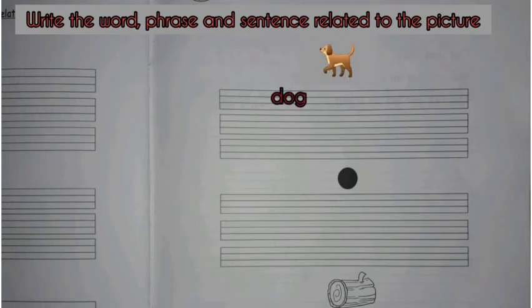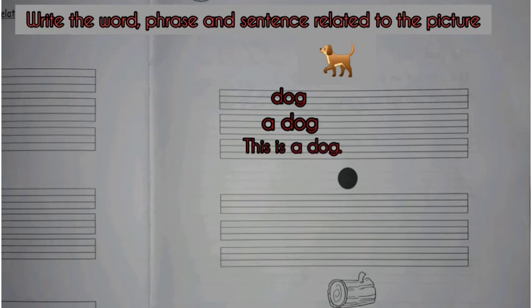In the first line write the word 'dog,' in the second line write the phrase 'a dog,' in the third line write the sentence 'this is a dog.' In this way, complete all the work, color all the pictures. Have fun, bye bye!